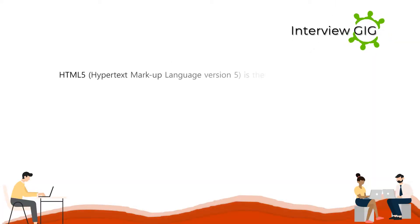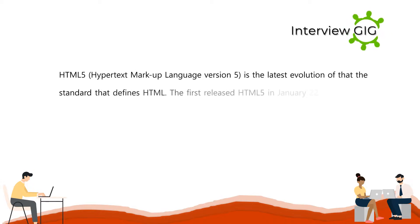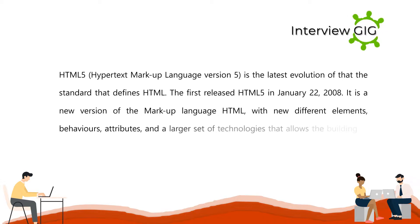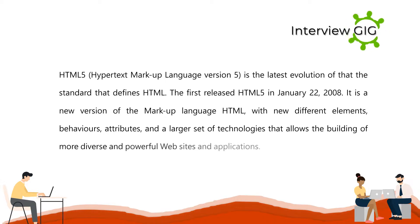HTML5, Hypertext Markup Language version 5, is the latest evolution of the standard that defines HTML. The first release of HTML5 was on January 22, 2008. It is a new version of the markup language HTML, with new different elements, behaviors, attributes, and a larger set of technologies that allows the building of more diverse and powerful websites and applications.